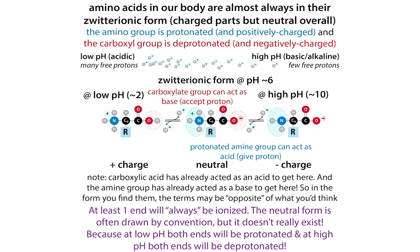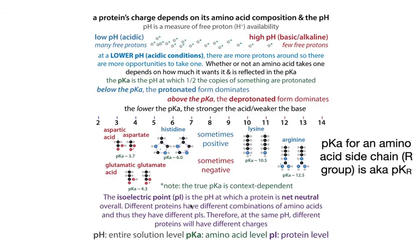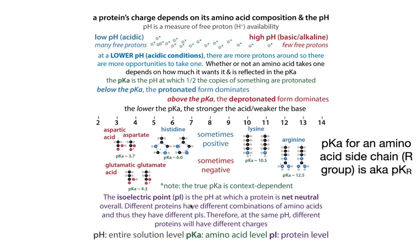It's also really important to know that when amino acids link together, their pKa's can change dramatically. Just like a stronger acid is going to have a lower pKa, a more acidic protein is going to have a lower pI. So we talk about an acidic protein versus a basic protein — typically acidic proteins are going to have a lower pI and basic proteins are going to have a higher pI. That comes from the combinations of acidic and basic side chains, how many there are, and which ones they are.